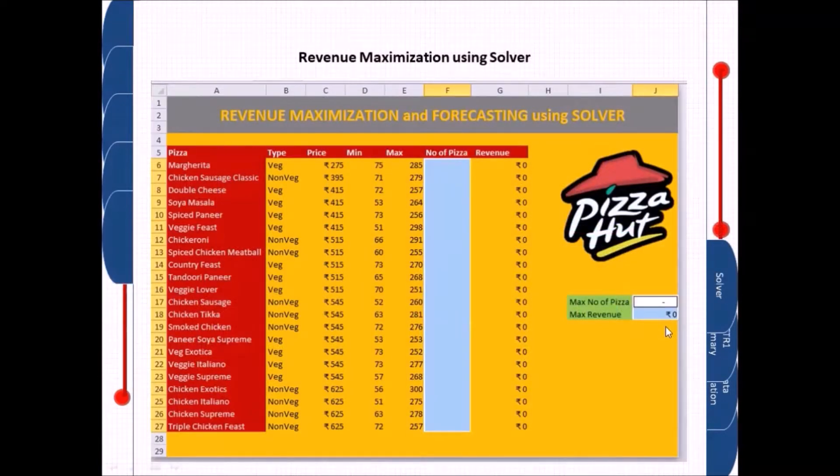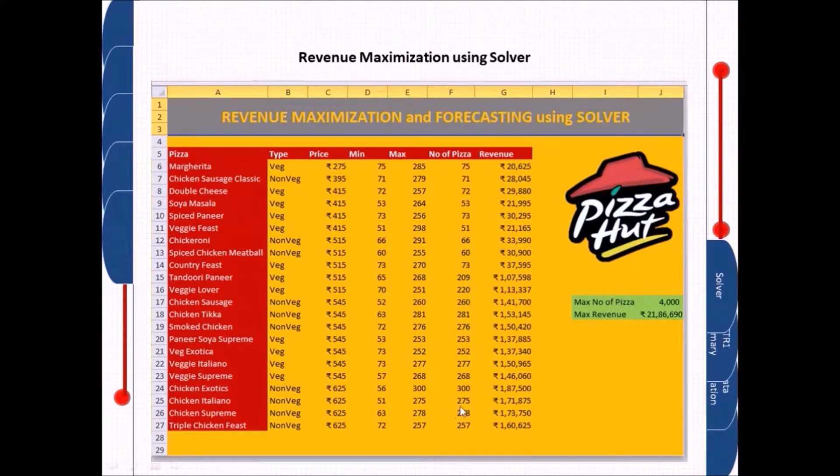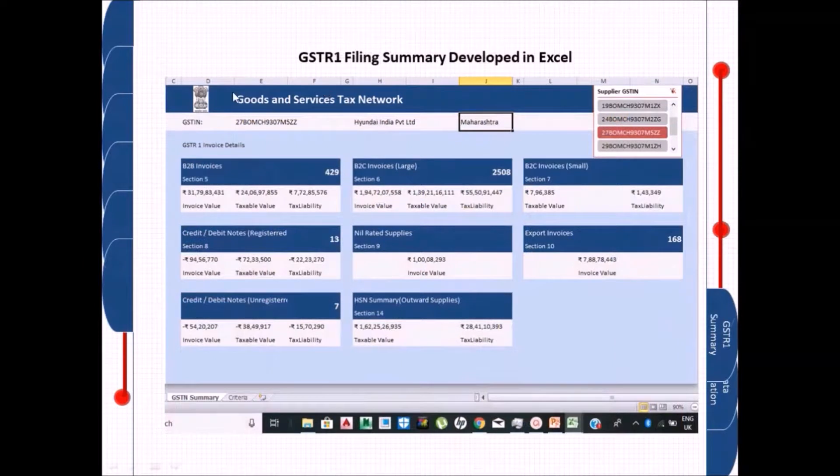This is the revenue maximizer model. If I want to maximize my revenue, what should I do with the minimum and maximum data? So on just one click, I'll be using Solver over here and maximizing my revenue. That's it. Now this is the GSTR1 filing data.